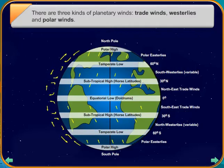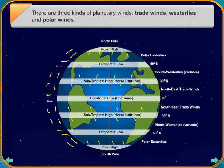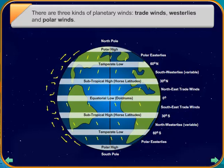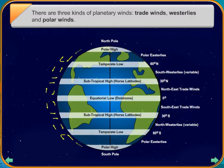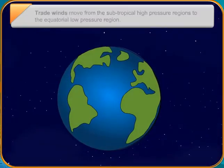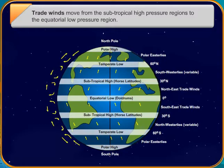One of the most important seasonal winds is the monsoon. These winds change their direction every six months. In summers, when the Indian Peninsula and Central Asia is very hot, the winds move in from the high-pressure zone above the Indian Ocean. Known as the south-west monsoons, these winds bring a lot of rain to the subcontinent.